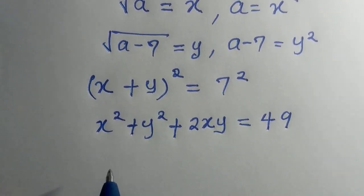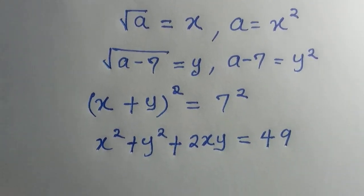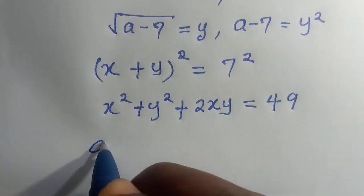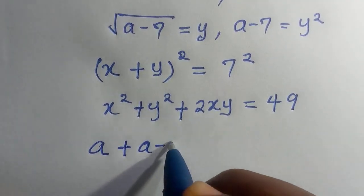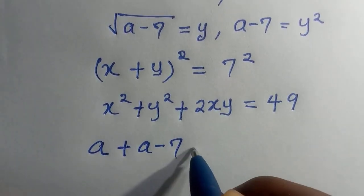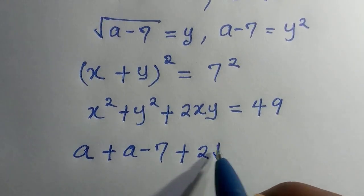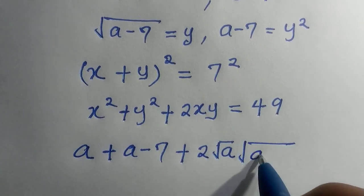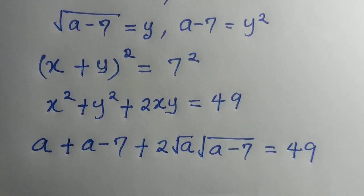So by trying to replace them, we have x², which is given as a, and y² is given as a - 7. Let's replace them. So we have this as a + (a-7) + 2. Then our x is √a, and y is √(a-7), everything equals 49.